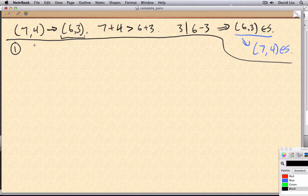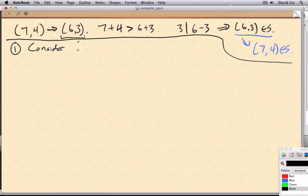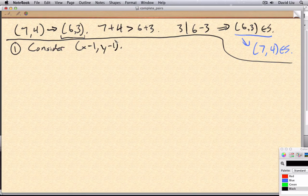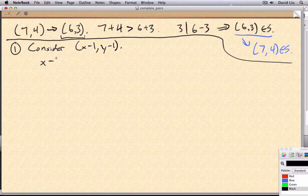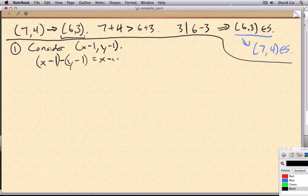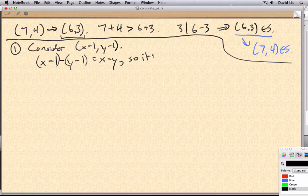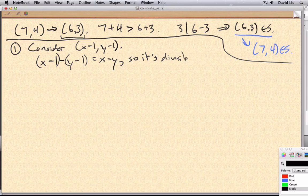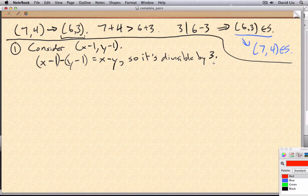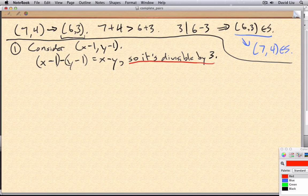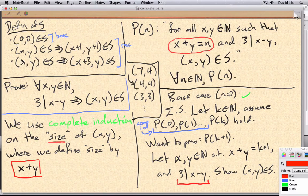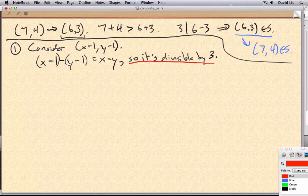So here's the first comment. Consider x minus 1, y minus 1. What do we know about this? Well, x minus 1 minus y minus 1, that's equal to x minus y. And so it's divisible by 3. Let's make sure we're all on the same page here. This is because we've assumed this. So 3 divides x minus 1 minus y minus 1.